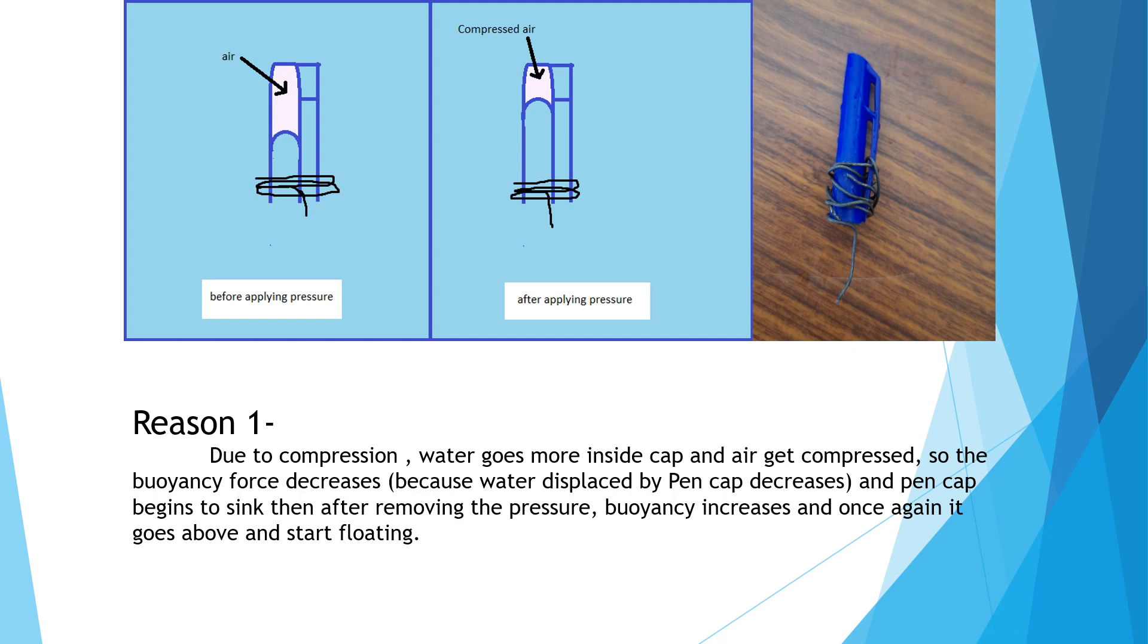Now one question comes in our mind: why is it happening? So I have shown in this figure that in the starting, the air quantity is more in pen cap, but now it's compressing because air is a compressible material and water is incompressible. So here air is getting compressed, due to that volume is decreasing.